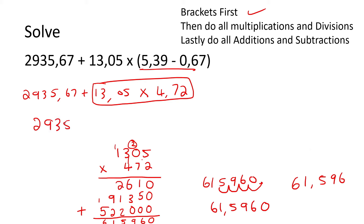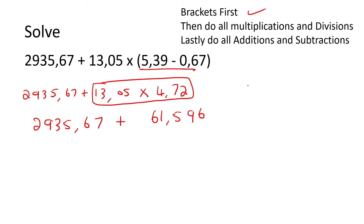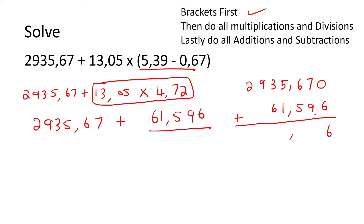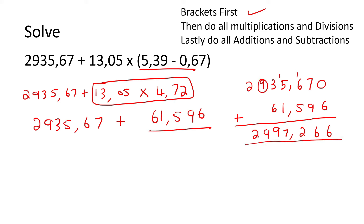So now we can say 2935.67 plus 61.596. When adding, put the decimals on top of each other. Zero plus six is six. Seven plus nine is 16, carry one. Six plus five is 11 plus one is 12, carry one. That gives us seven, then nine, nine, and two. So the final answer is 2997.266.